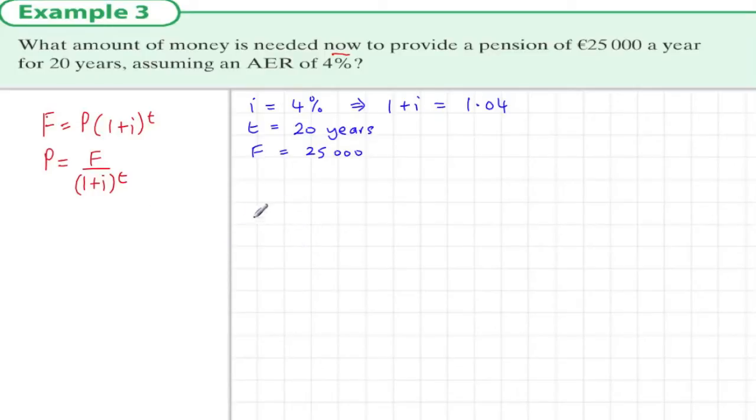So what we want to find out is the present value. That's kind of a series of these, so the amount is less than €25,000 times 20, because the first €25,000 would have 20 years of interest to amount to the value of €25,000.